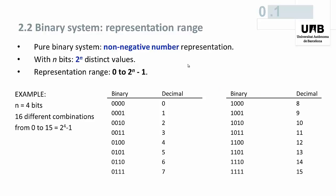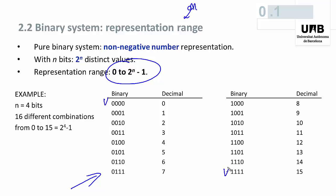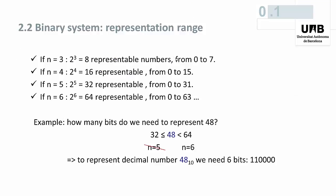Some comments about the range of representable numbers: with n bits we can represent all natural numbers from 0 to 2 to the n minus 1. There are exactly two to the n combinations of zeros and ones in an n-bit vector. Here is an example with n equal to 4: there are 16 combinations of 4 bits, and in this table we see all combinations from 0000 up to 1111, corresponding to decimal numbers from 0 to 15.